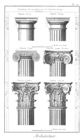Minaret: in Islamic architecture, a tall spire with a conical or onion-shaped crown, on or near a mosque, that is used by the imam to give the prayer call.